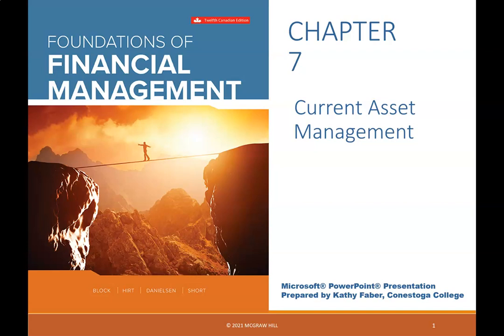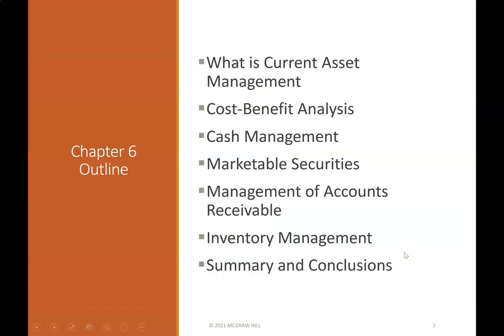Chapter 7: Current Asset Management. Chapter 7 Outline: What is Current Asset Management? Cost-Benefit Analysis, Cash Management, Marketable Securities Management, Management of Accounts Receivable, Inventory Management, Summary and Conclusions.